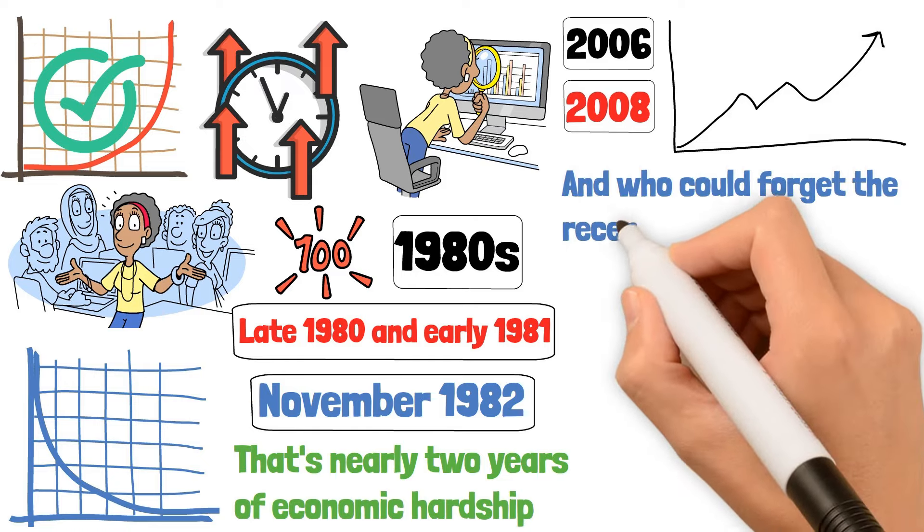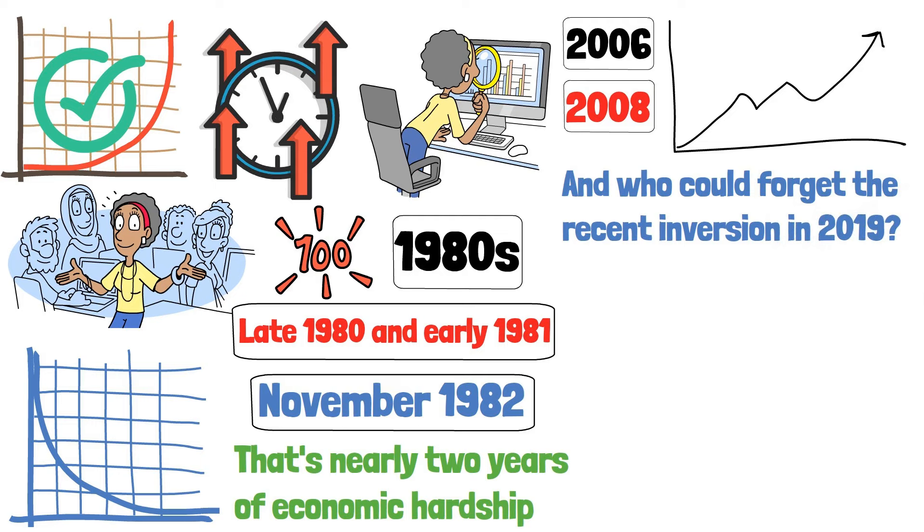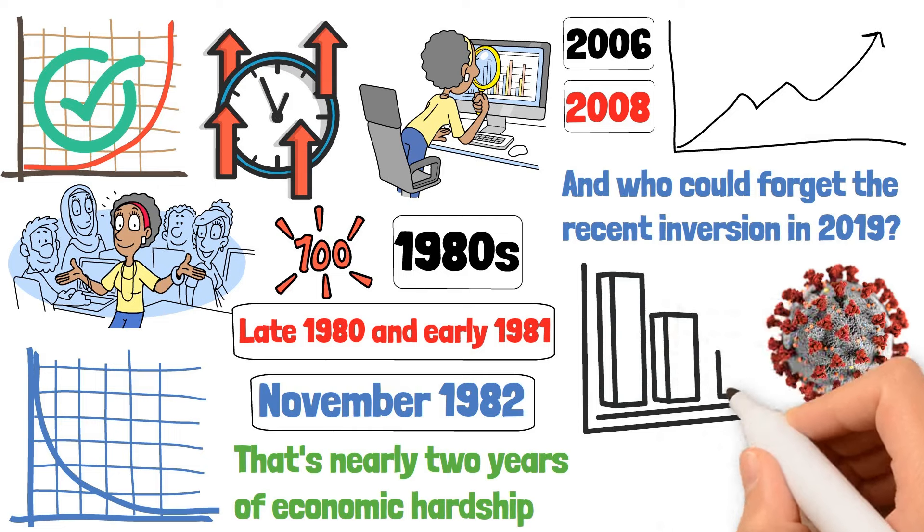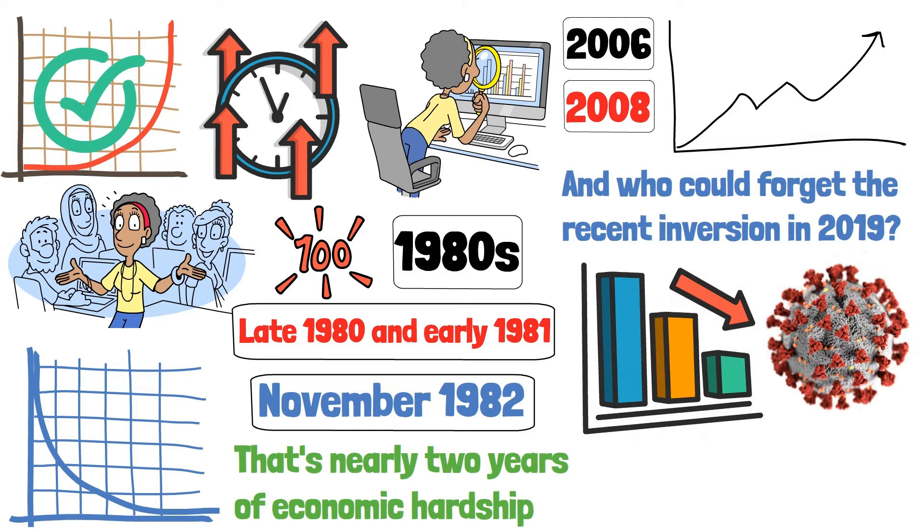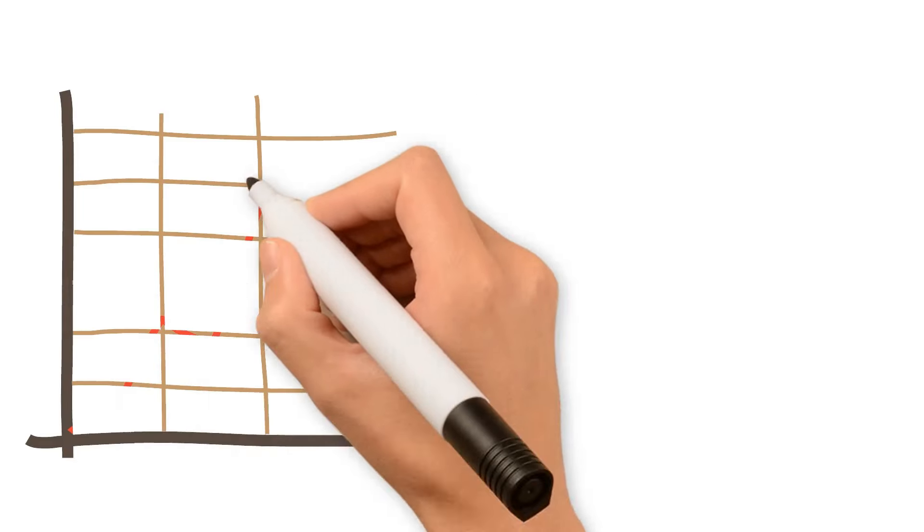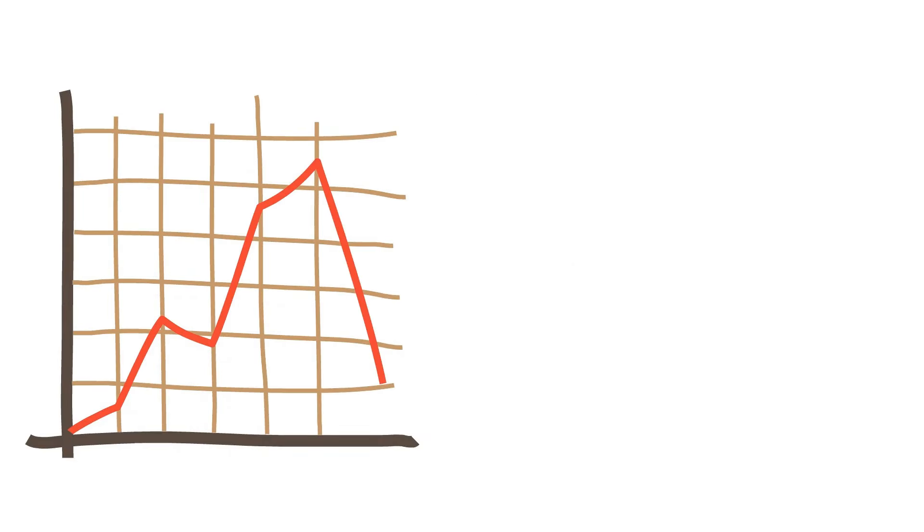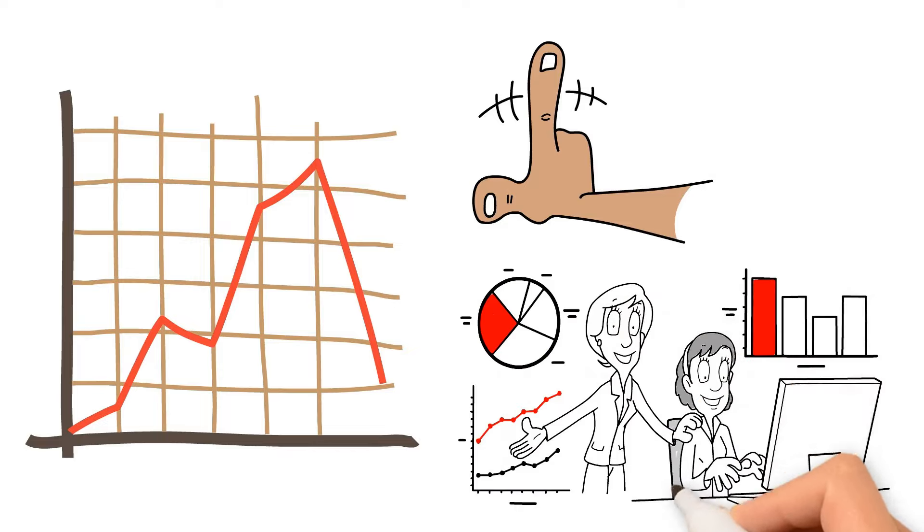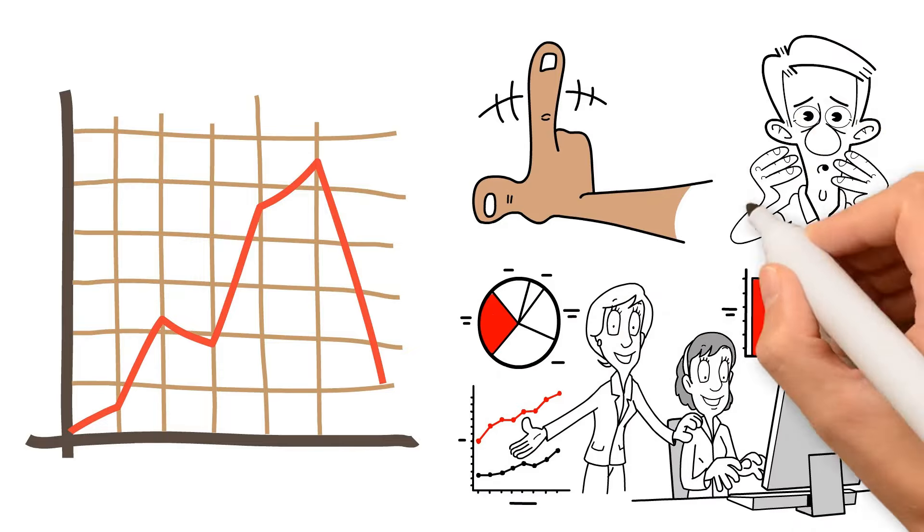And who could forget the recent inversion in 2019? It was almost a year before the COVID-19 pandemic struck, leading to a global economic slowdown. These inversions varied in duration, but they all shared one thing. They were the harbingers of economic downturns. The yield curve doesn't lie. It bends and twists, reflecting the market's deepest fears and hopes.